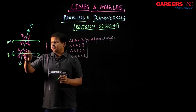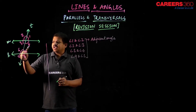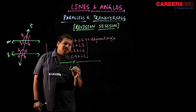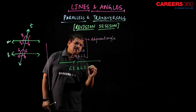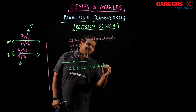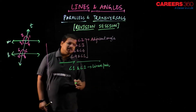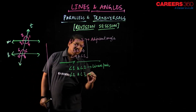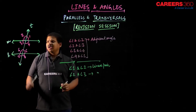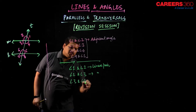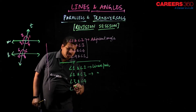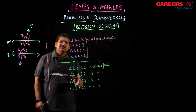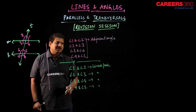Similarly, angle pairs 5 and 6, 6 and 7, 7 and 8, and 8 and 5 are all adjacent angles. One more thing: angle 1 and angle 2 also make a linear pair. Similarly, angle 2 and angle 3, angle 3 and angle 4, and angle 4 and angle 1 are all making a linear pair — that is, the sum of these two equals 180 degrees.